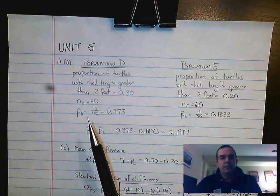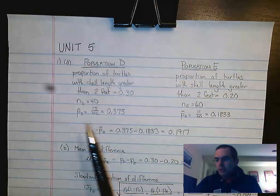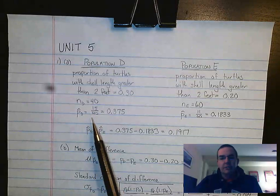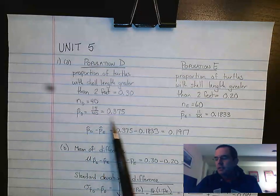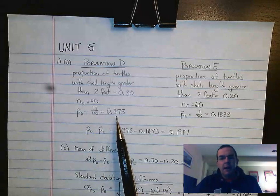What they're asking for is what the sample proportion is. So the way you need to do that is you need to show that fraction. 15 over 40 gives you 0.375 for Population D.